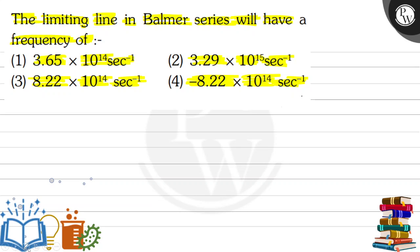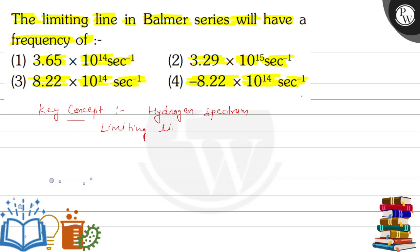Limiting line in Balmer series — for this our key concept: this is the hydrogen spectrum. Now, limiting line ka matlab hai last line — limiting line means the last line of the series.